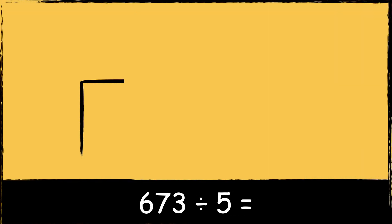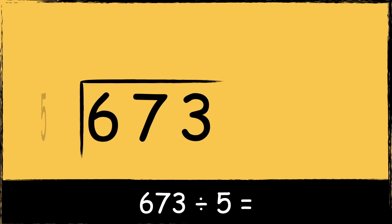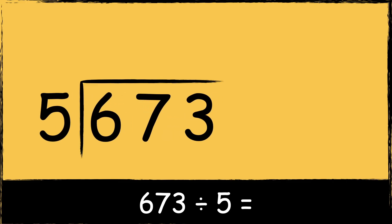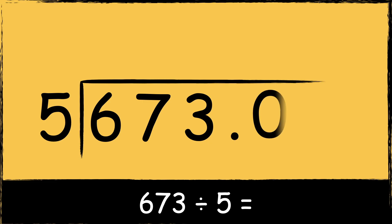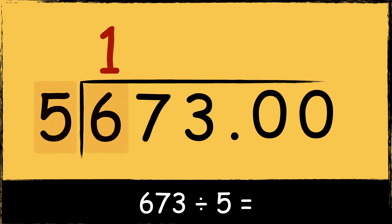Here's the next example: 673 divided by 5. Remember we need to place a decimal point and some zeros after the divisor. Five goes into six once with one left over. Then five goes into seventeen three times with two left over.